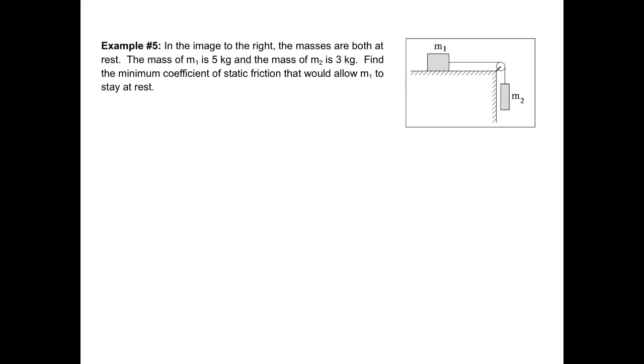But what makes it difficult is that we're going to want to end up treating it as a system. We have talked about systems a little bit. This says, in the image to the right, the masses are both at rest. The mass of M1 is 5 kg, and the mass of M2 is 3 kg. Find the minimum coefficient of static friction that would allow M1 to stay at rest.